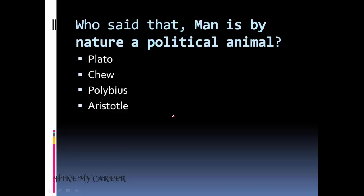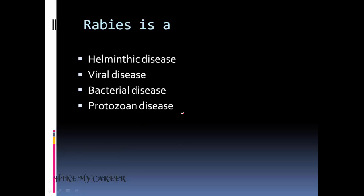Next question: who said that man is by nature a political animal? Answer is Aristotle. Next question: rabies is a - option one: helminthic disease, option two: viral, option three: bacterial, option four: protozoan. Answer is option B, viral disease.